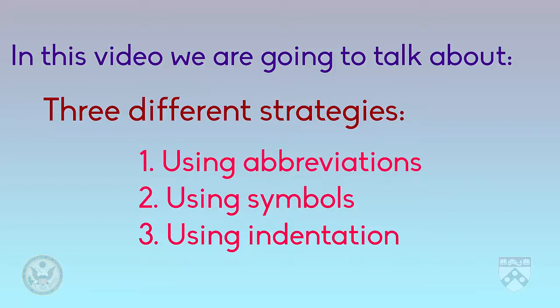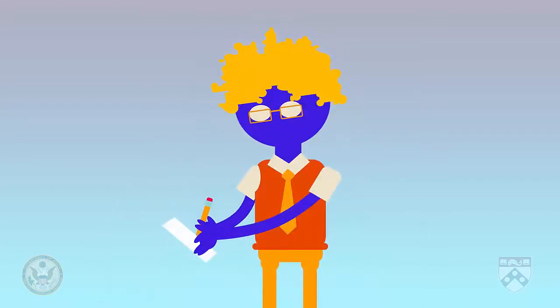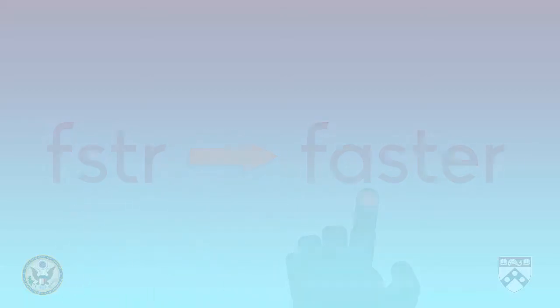Let's look at abbreviations first. An abbreviation is a shortened form of a word or phrase. So, instead of writing down every letter in a word, a journalist chooses to leave some letters out. This means that they can write much faster. The important thing is that they must be able to recognize the word when they look at it later.